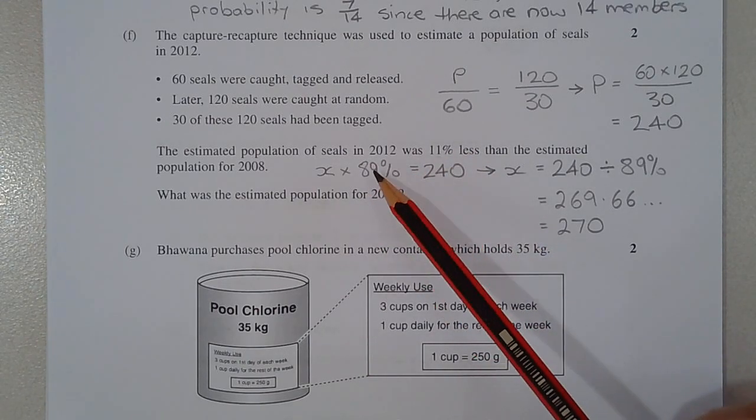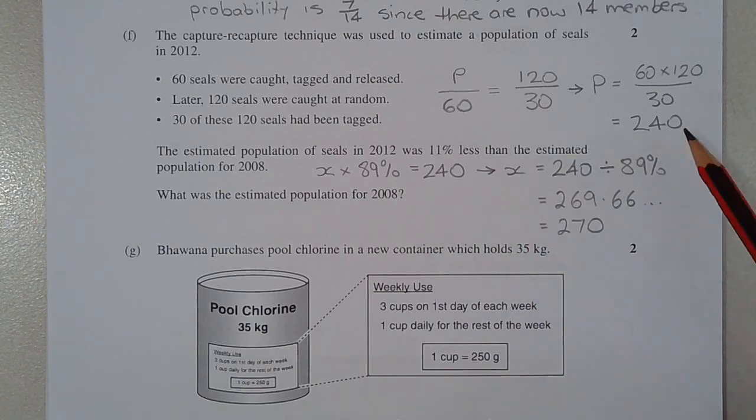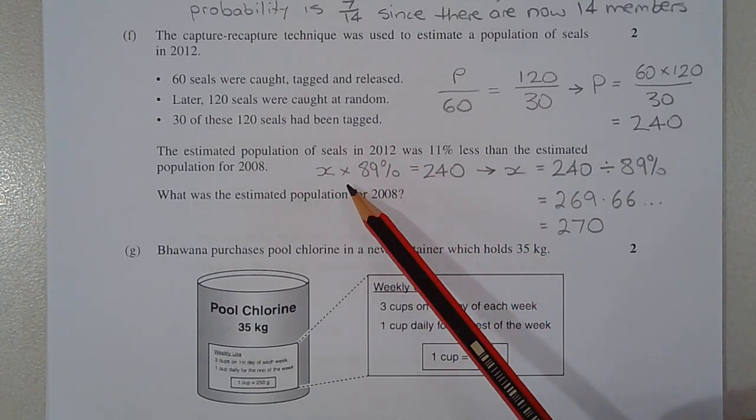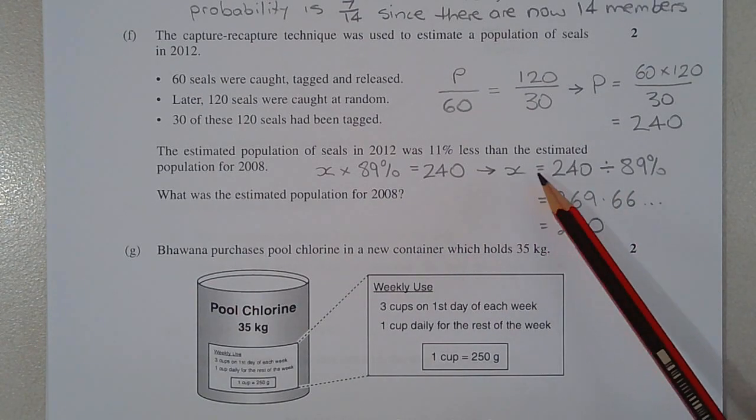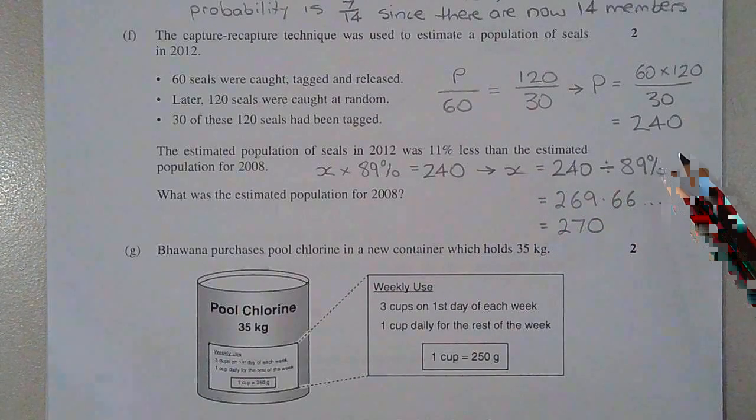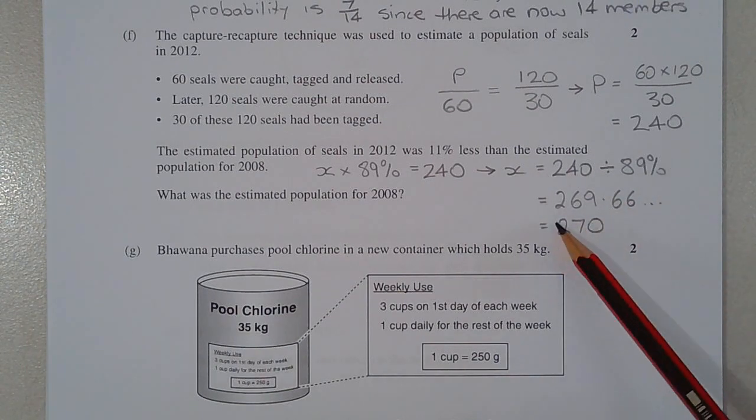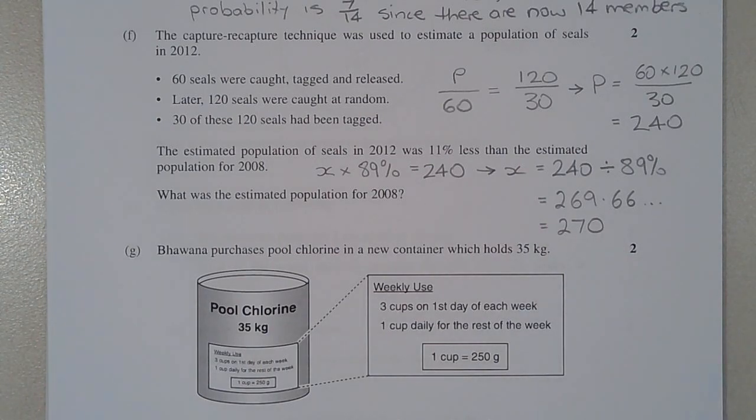So after the reduction of 11% was applied, we have 240 seals. Let's reverse that by dividing 240 by 89%. So X equals 240 divided by 89%, which equals 269.66 and so on. And that rounds to 270 seals.